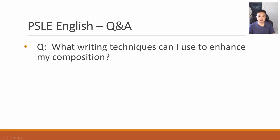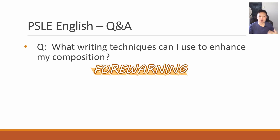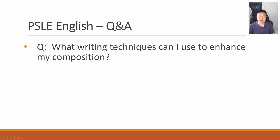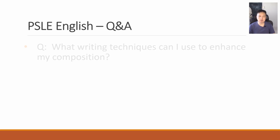What writing techniques can I use to enhance my composition? You can use foreshadowing to build up the suspense. You can include similes, idioms, etc. Try to include good phrases, words, adjectives, or expressions that you can recall from model compositions you have read in the past. All these techniques can help you to enhance your composition and make it better.